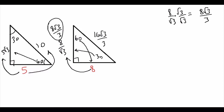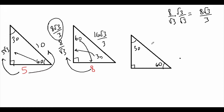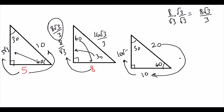Another scenario: we're given the hypotenuse (across 90°) as 20. Across 30° is half the hypotenuse, which is 10. And across 60° is 10√3.